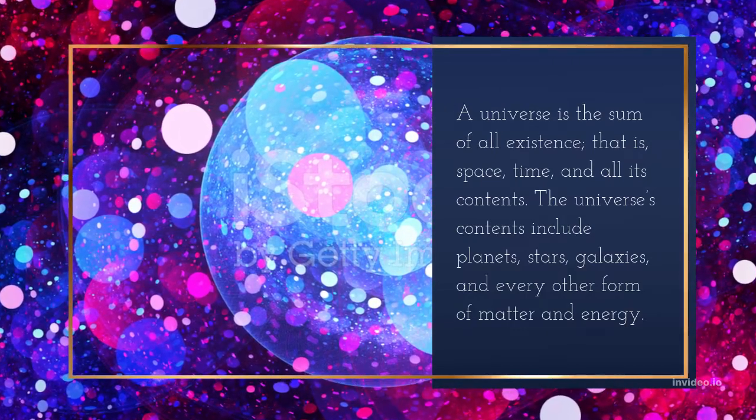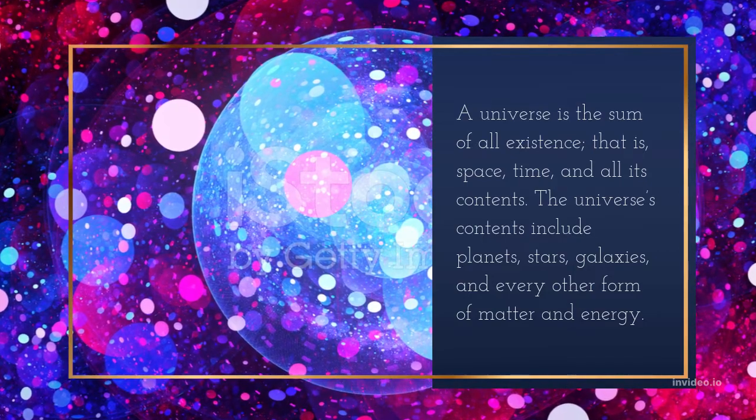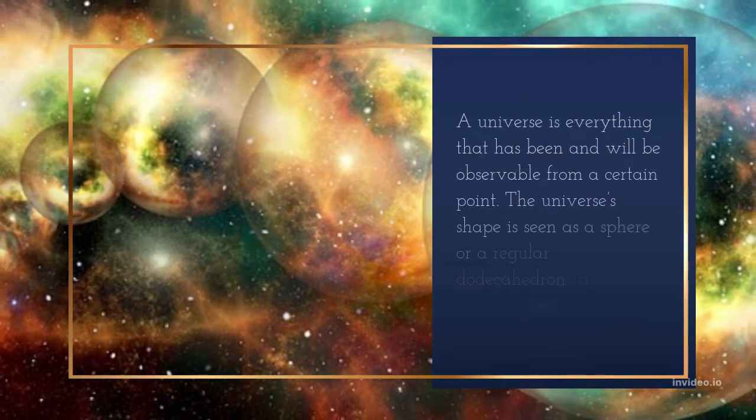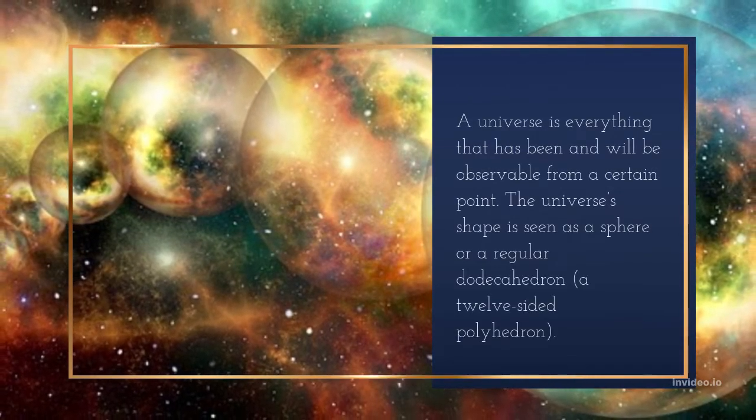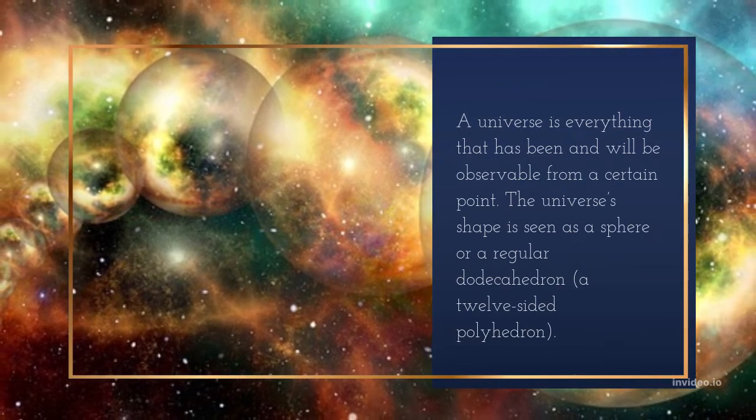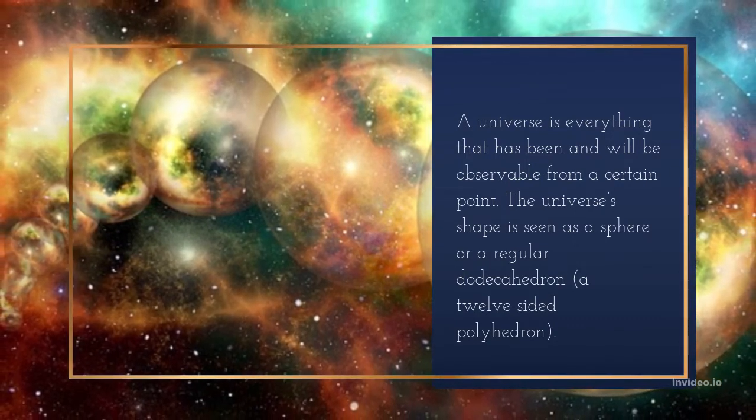The universe's contents include planets, stars, galaxies, and every other form of matter and energy. A universe is everything that has been and will be observable from a certain point. The universe's shape is seen as a sphere or a regular dodecahedron, a twelve-sided polyhedron.